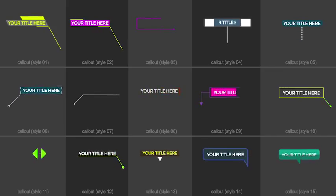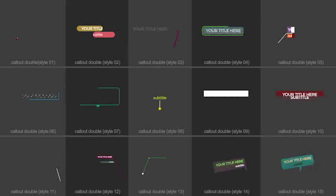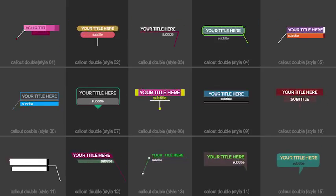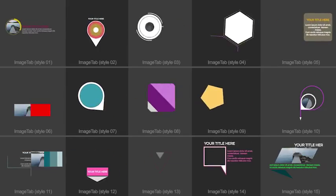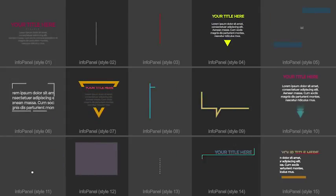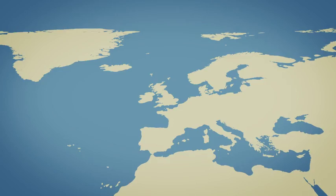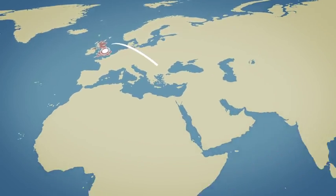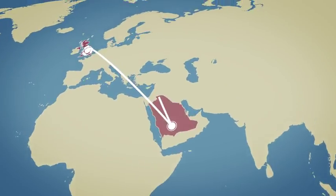Earth Map Connections offers 60 elements, including callouts and info tabs. And if you want a different look, you can instantly turn the Earth Map into a vector map.